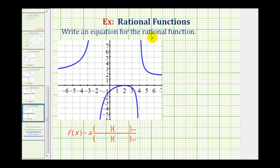We want to write an equation for the rational function from the graph of the rational function. To do this, we'll write the rational function in factored form, or the form given here below, where a is a constant, and then we'll have factors in the numerator and denominator based upon the graph.